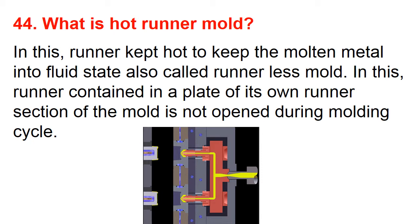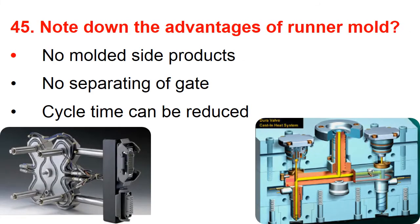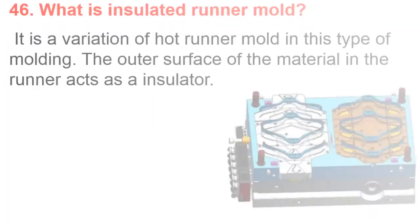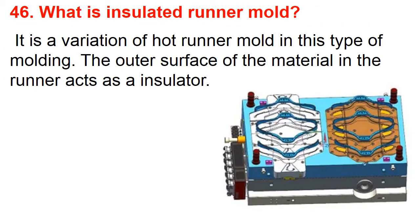The runner section of the mold is not opened during the molding cycle. Question number forty-five: Note down the advantages of hot runner mold. First is no molded side products, no separating of gates, and cycle time can be reduced. Question number forty-six: What is the insulated runner mold?